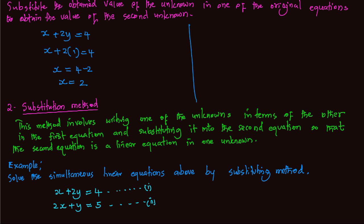Alternatively, for y: from x plus 2y equals 4 and using x equals 2 calculated above, we substitute to get 2 plus 2y equals 4. So 2y equals 4 minus 2, giving 2y equals 2, therefore y equals 1.